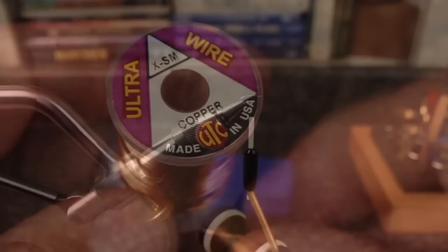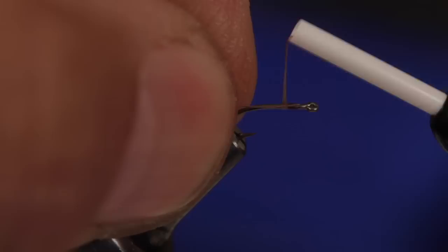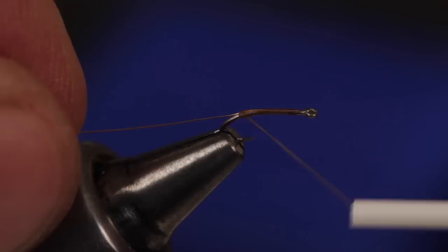For durability, segmentation, and a bit of shine, extra small, copper-colored ultra wire is used to rib the fly. About a 3-inch length is plenty. With thread wraps, secure the wire to the hook shank and continue taking wraps rearward to just above the barb, while allowing thread tension to carry the wire to the far side of the hook.